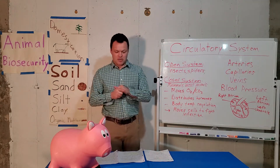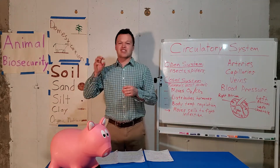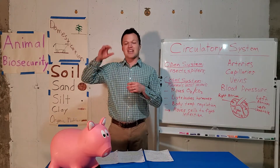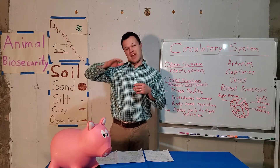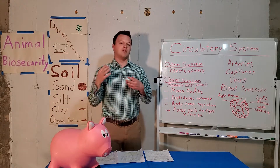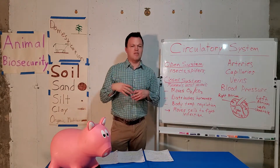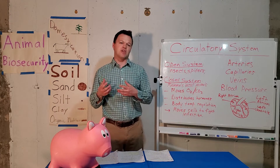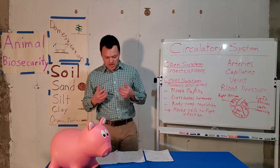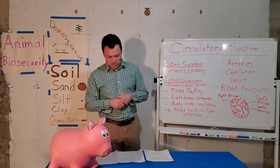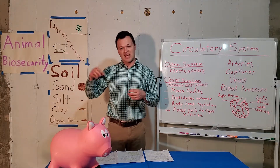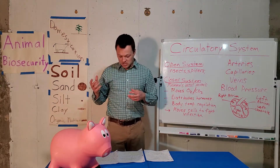Birds also have to have an extremely interesting circulatory system because they can fly at different altitudes. As humans, when we change altitudes, our blood pressure might drop and our body experiences a lot of different forces. A bird's system will have a higher volume of blood per stroke to make sure that blood reaches the veins as well as the muscles.